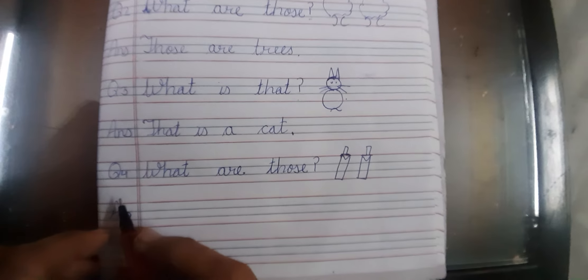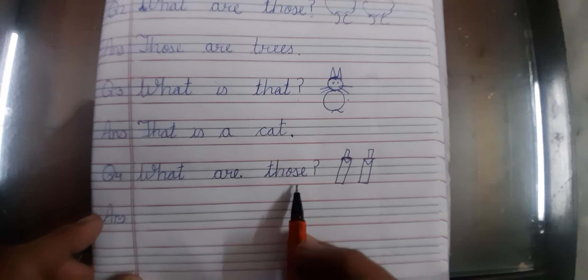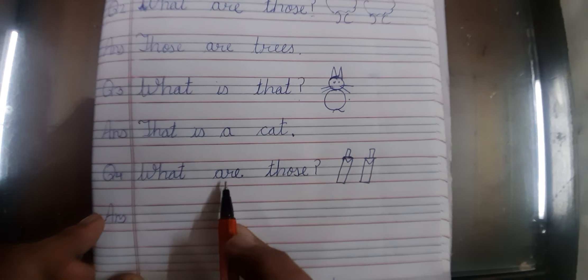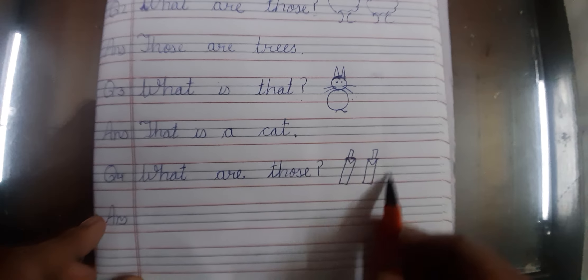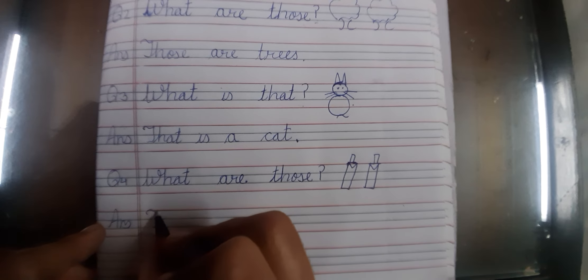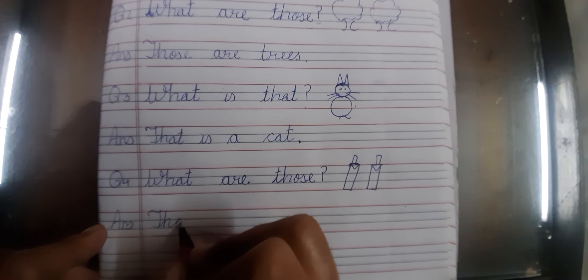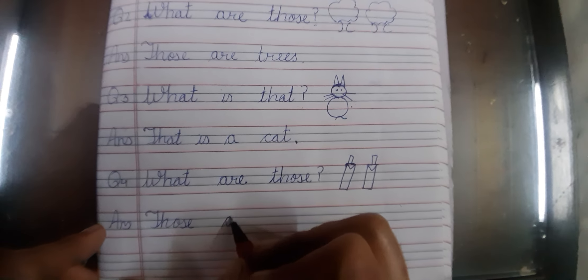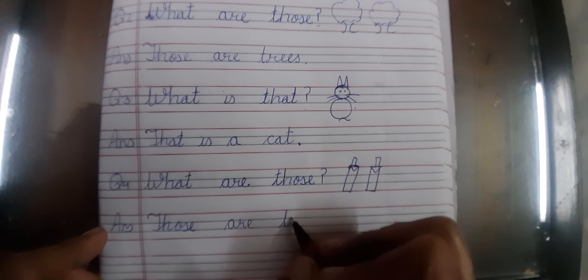Okay. And our fourth question is, what are those? What are those? Those are bats. Those are bats. So we write down, those are bats.